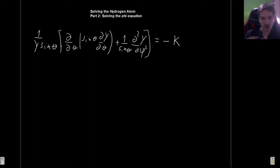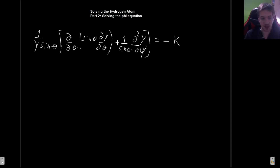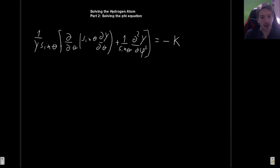In the previous video we began solving the hydrogen atom, and what we did in particular was to separate the radial and angular equations. What we have here is the angular equation, which is what we will now begin to solve. This is a partial differential equation and we want to use separation of variables to transform it into two equations that we can actually solve.